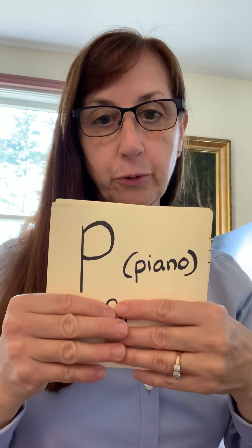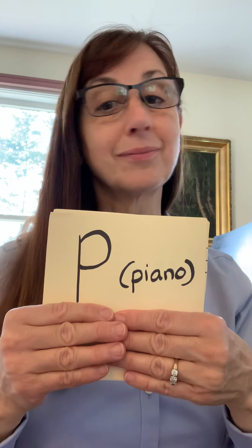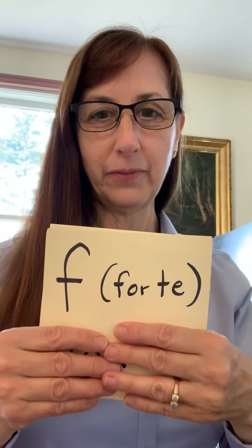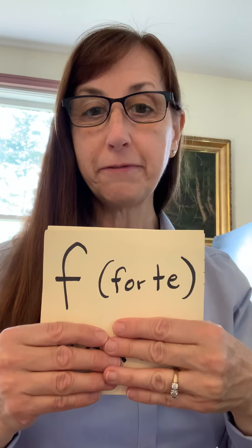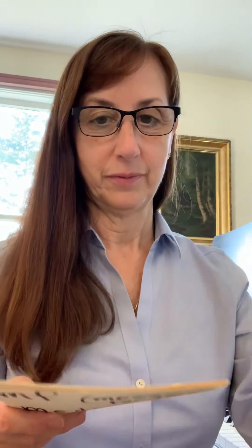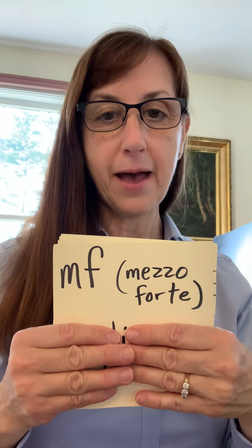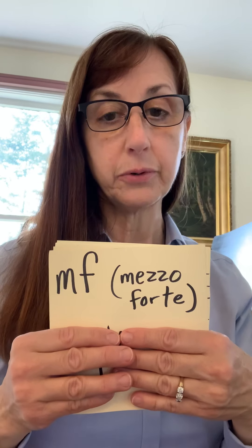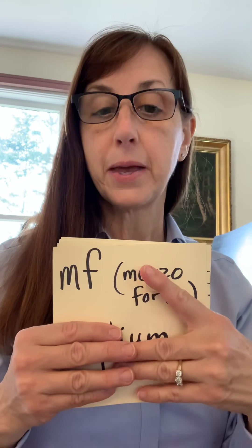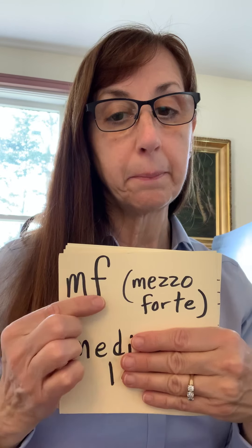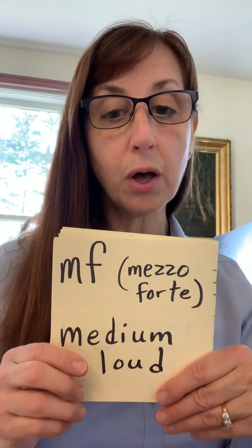Now our dynamics. The letter P means soft. The letter F means loud. The letters MF means moderately loud or medium loud — mezzo forte, which is Italian. And MP would be medium soft.